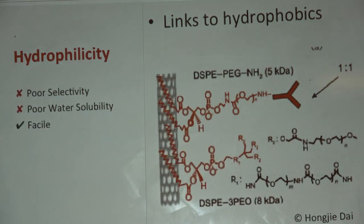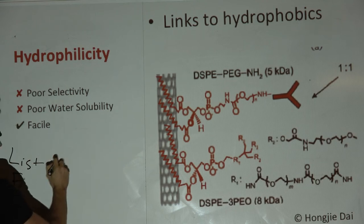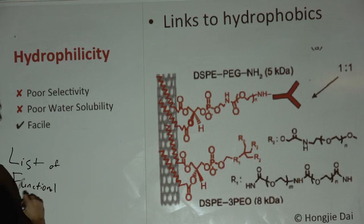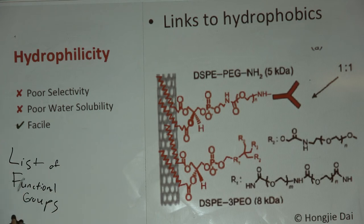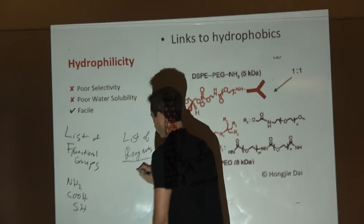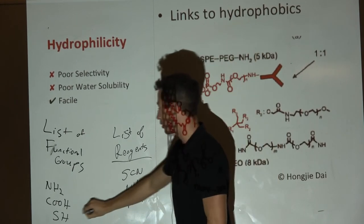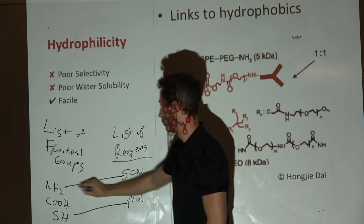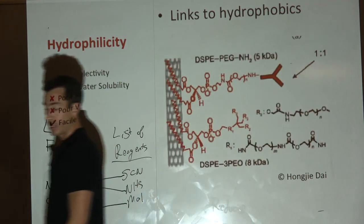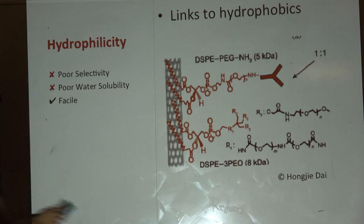What will you be expected to know? I would expect you to be able to match functional groups to reagents. If I gave you NH2, COOH, SH, and then SCN, NHS, maleimide, I'd expect you to match these. I would expect you to know, say I want to label X, how would I do it.